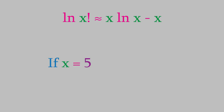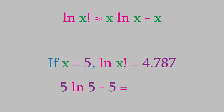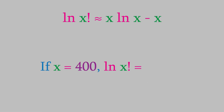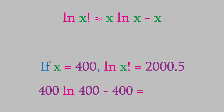For example, suppose x equals 5. The exact value of the logarithm of x factorial is 4.787. Using Stirling's approximation gives 3.047 — that's about a 36% error, which is not very close. But if x is 400, the exact value of the logarithm of x factorial is 2000.5, while Stirling's approximation gives 1996.6 — an error of only about 0.2%. The approximation gets even better the larger x is.